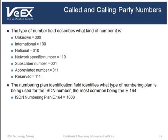The number field type describes what kind of number it is. There are seven different types: unknown, international, national, network specific, subscriber, abbreviated, and reserved. The numbering plan identification field shows what type of numbering plan is being used for the ISDN number. The most common numbering plan is E164.